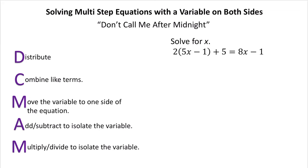What that stands for is: we first start off by always Distributing, then we Combine like terms, Move all the variables to one side of the equation, Add or subtract to isolate the variable, and then Multiply or divide to isolate the variable. You may not need to use all these steps in every problem — if you don't need to combine like terms, for example, you just skip it and move on. The main idea is to go in this order to keep everything organized.